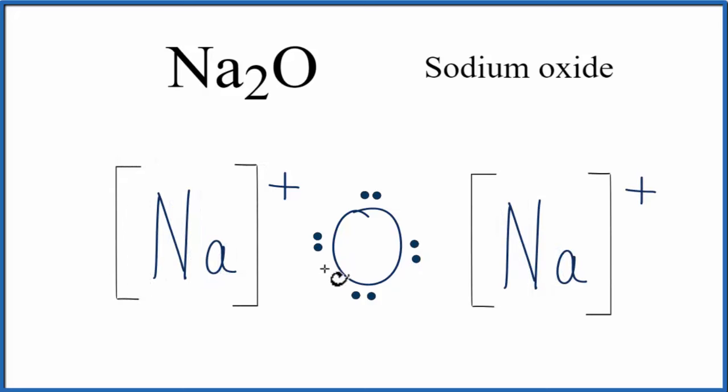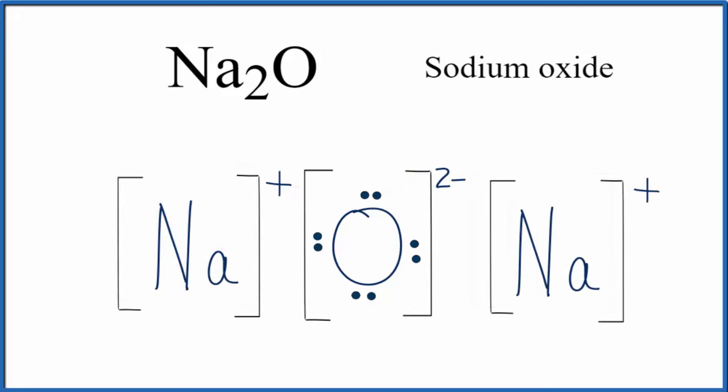And then the oxygen, the non-metal, that's gained those two electrons, one from each sodium. It now has a two minus charge. So we'll need to put brackets around it as well. And that makes this the Lewis structure for Na2O.